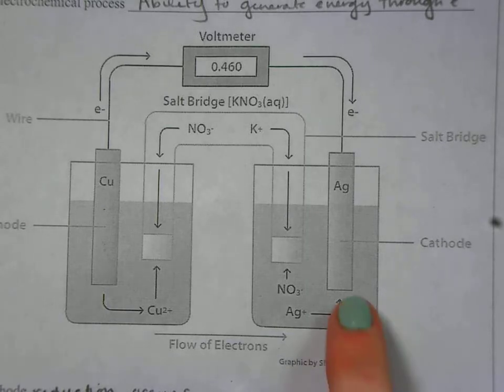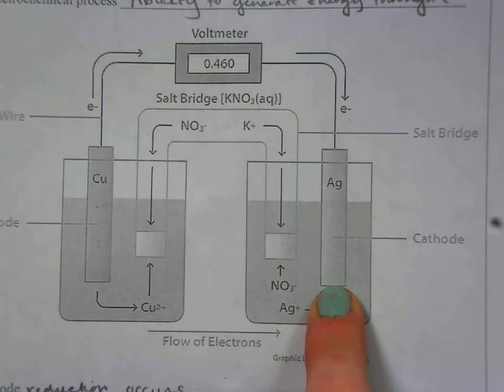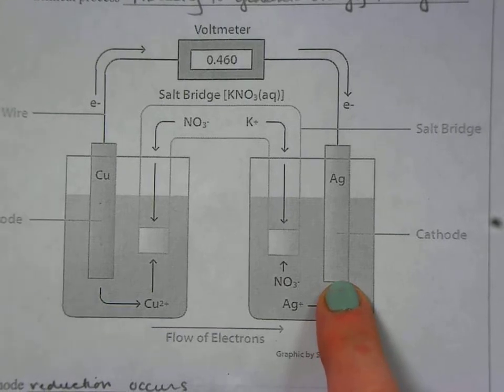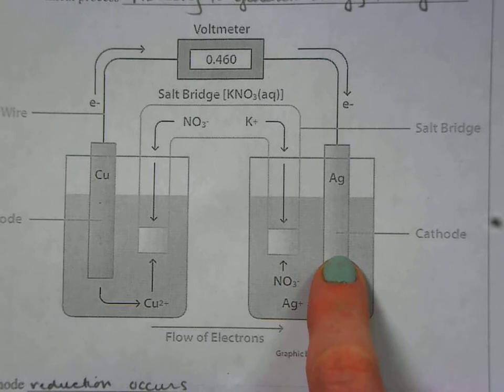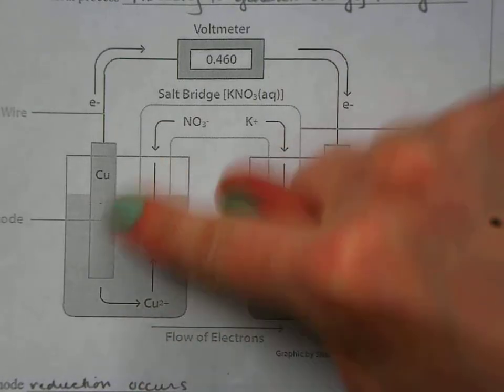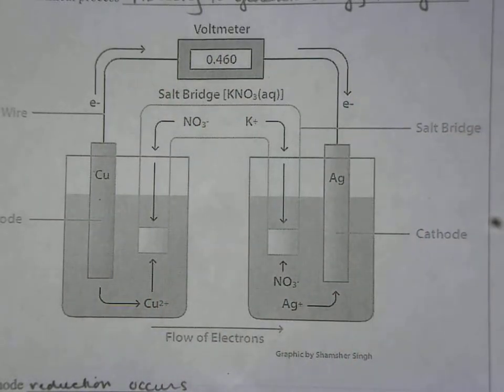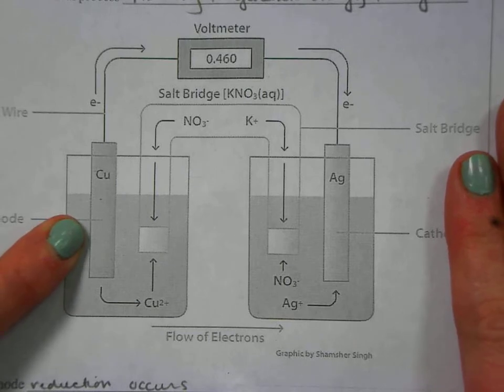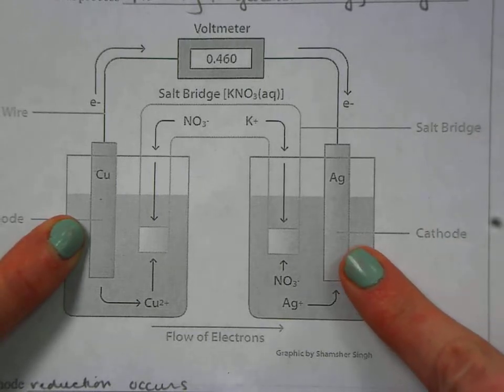So we're going to start off over here at your cathode. If you think about cation, this tends to be what we think about as the more positive part. The cathode is where the reduction is occurring. Your anode is where your oxidation occurs and I remember that because they're both vowels, so anode oxidation. What happens is that at your anode we lose electrons and those go over to the cathode and that's going to start that reaction.